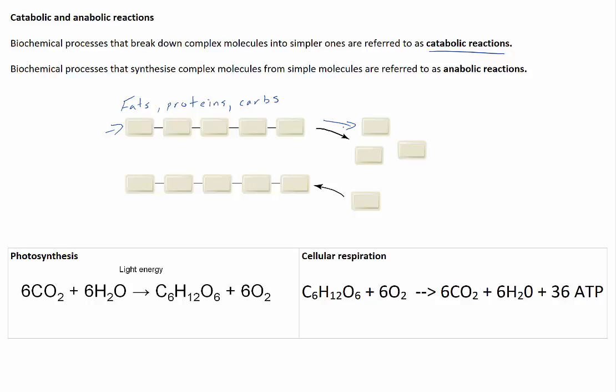The opposite of this process is when simple molecules are joined together to form more complex molecules, and these reactions are referred to as anabolic reactions. An example is when you join amino acids together to form proteins. You may have heard the term anabolic before in reference to anabolic steroids and bodybuilding, because anabolic steroids are hormones that enable cells to increase their production of protein, particularly in muscle cells.